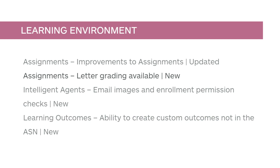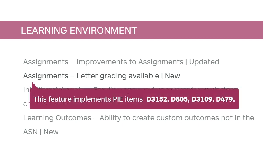Grade schemes have also been reordered and follow a default of highest grade to lowest display. API routes have been added to enable the creation of select box grade items. This feature implements PI Items D3152, D805, D3109, and D479.